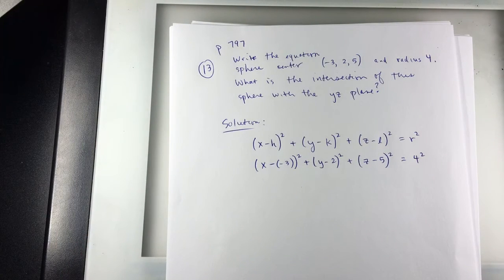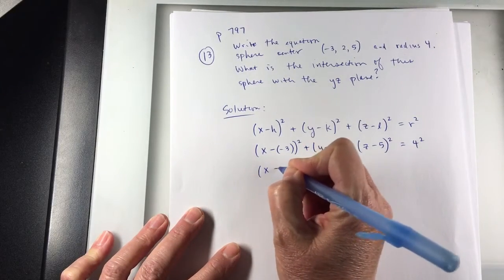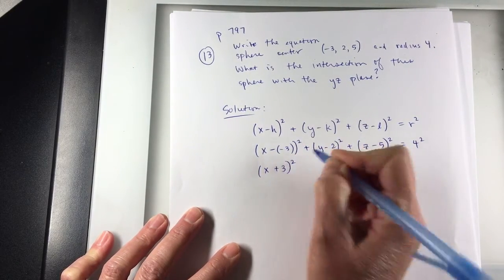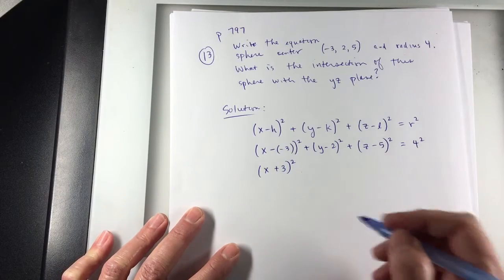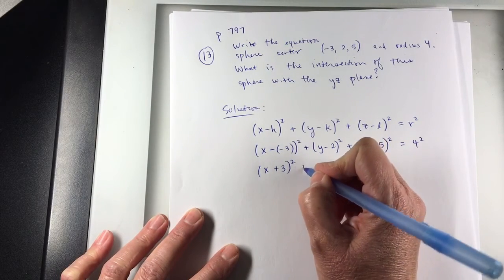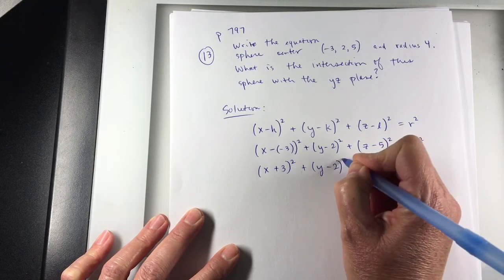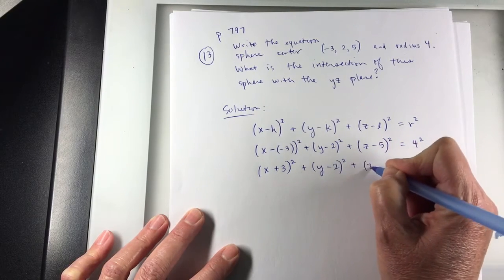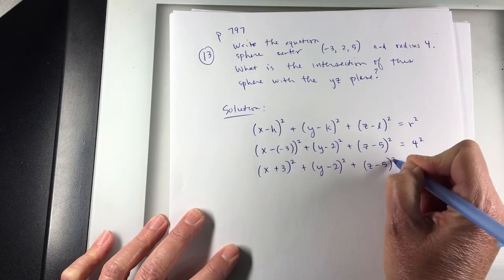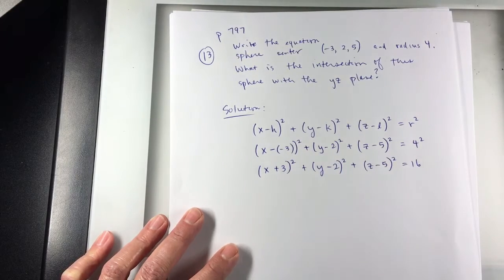And I will go ahead and clean it up a little bit. So (x + 3)² plus (y - 2)² plus (z - 5)² equals 16.